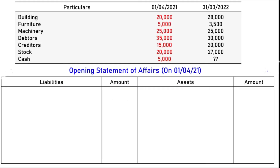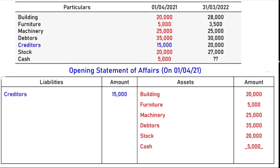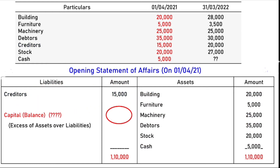The opening and closing balances are: building, furniture, machinery, debtors, creditors, stock, and cash. All assets are on the right side and all liabilities are on the left side. Building, furniture, machinery, debtors, stock, and cash are assets. On the liability side, we have creditors. The total on the liability side gives us opening capital. We get 95,000 as the opening capital, and we can calculate interest on capital at 5% per annum.